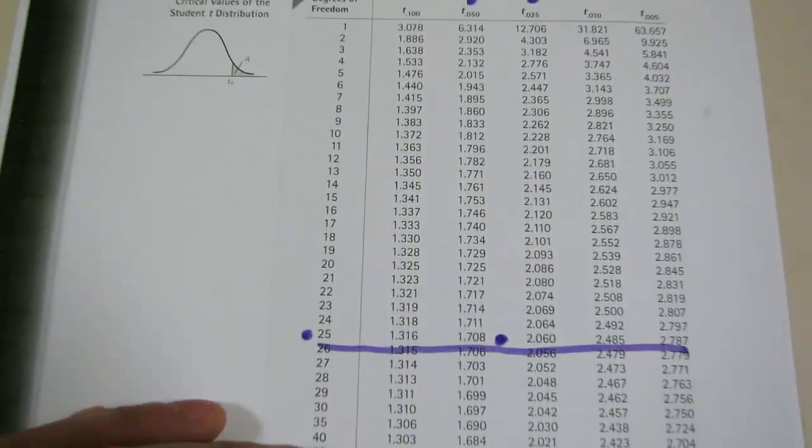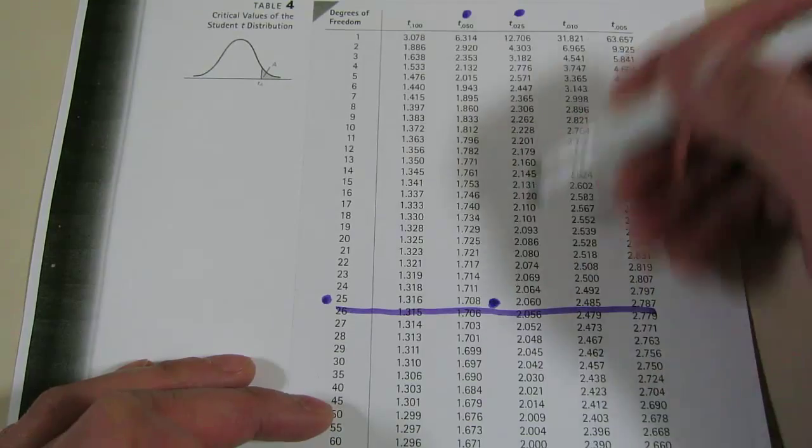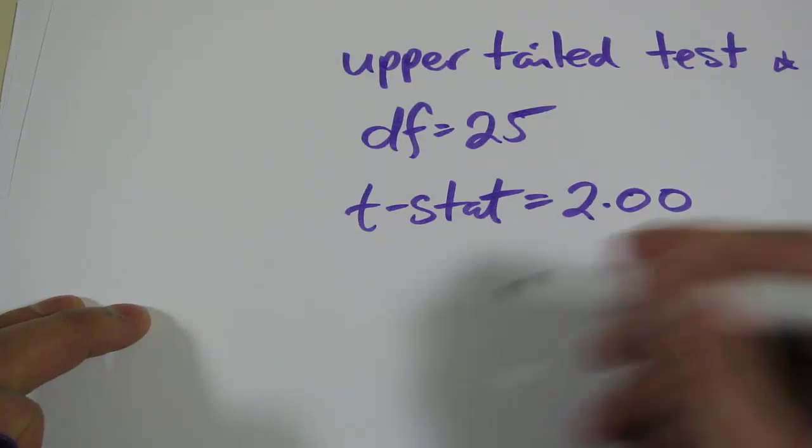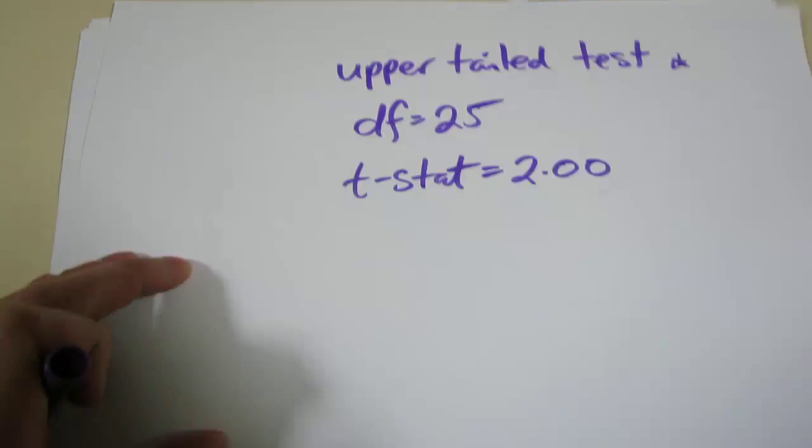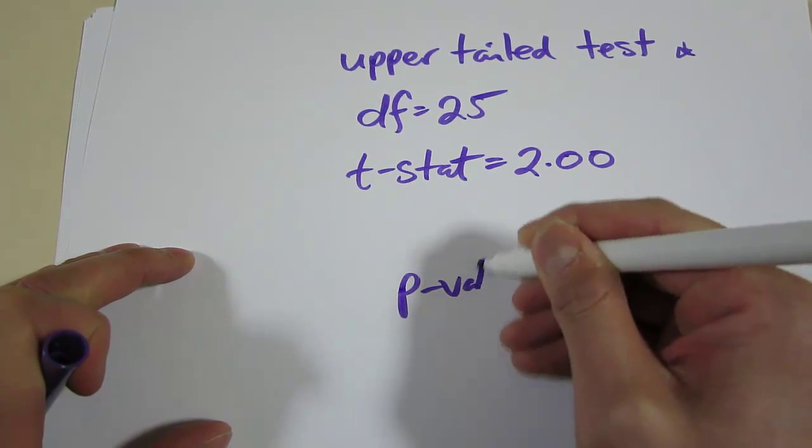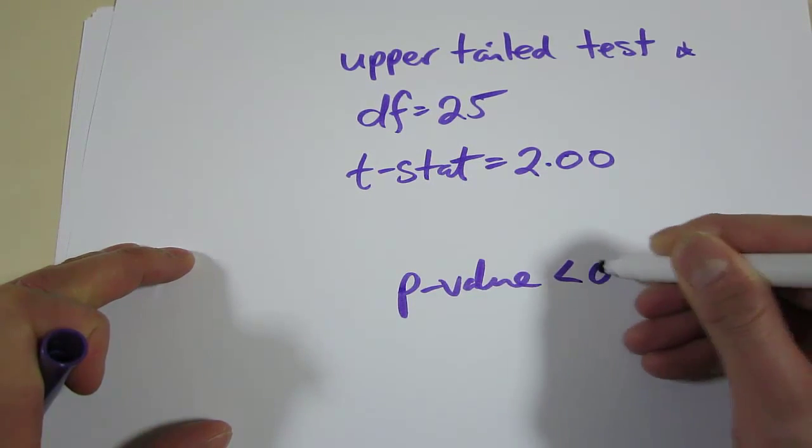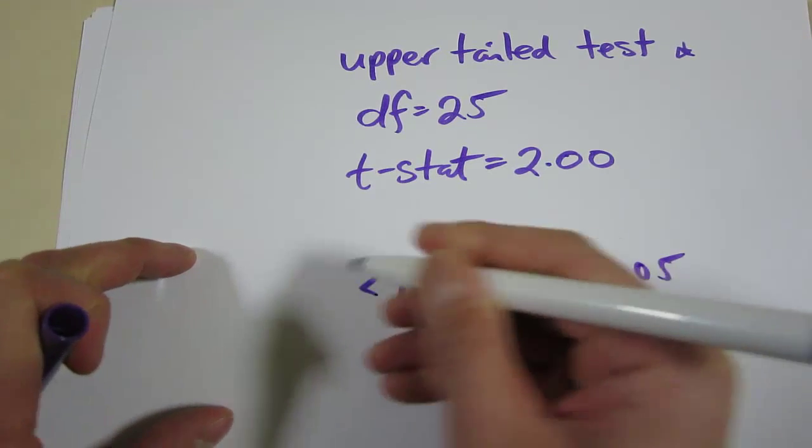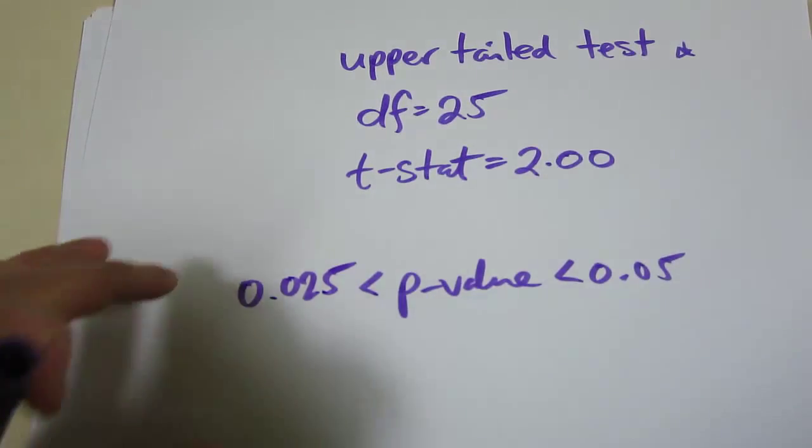So we know that our p-value for 2 lies between these two significance levels. And that's the interval. So what we can say now is that our p-value lies between 5% and 2.5%.